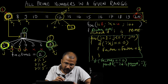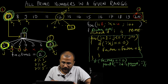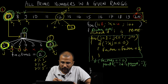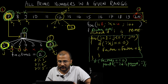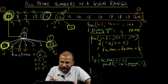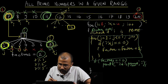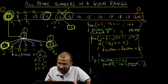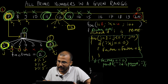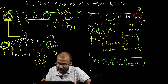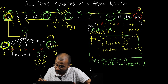So in this case it will display that 7 is prime. 8 is not prime — divisible by 2. 9 is not prime — divisible by 3. 10 is not prime — divisible by 2. 11 is prime. 12 is not prime. 13 is prime. 14 is not prime. 15 is not prime. 16 is not prime. 17 is prime. 18 is not prime. 19 is prime. And 20 is not prime.